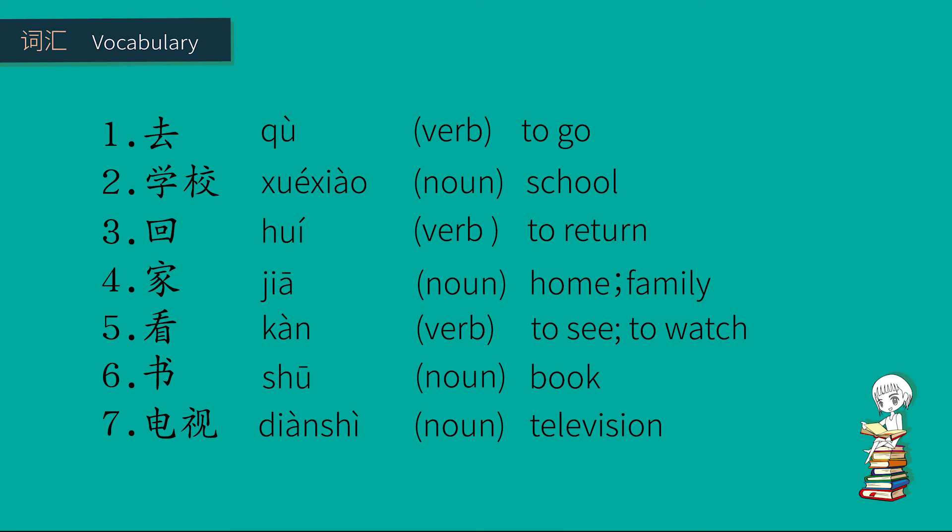去 means to go. 学校 means school. 回 means to return. 家 means home or family. 看 means to see or to watch. 书 means book. 电视 means television. Now let's do some exercises.